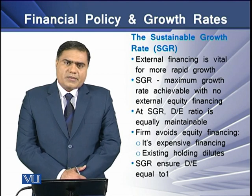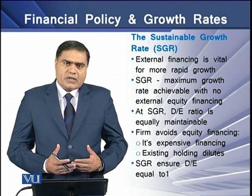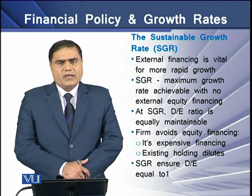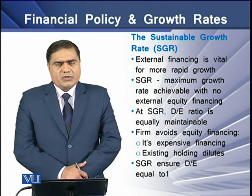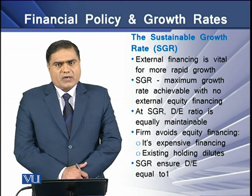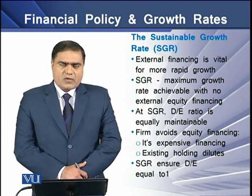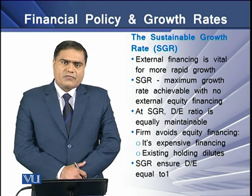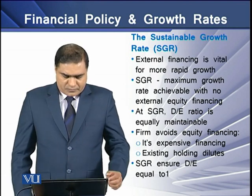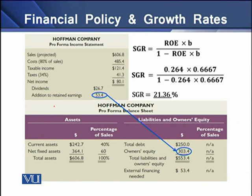There are two reasons why a firm does not want to raise equity. Shareholders don't want to dilute their earnings per share, so the better option for the firm is to raise debt. The sustainable growth rate formula is: ROE multiplied by B, divided by 1 minus ROE multiplied by B. Two variables are used: return on equity (ROE) and B, which means retention or addition to retained earnings.